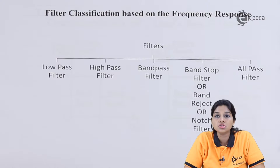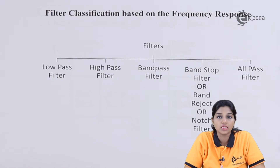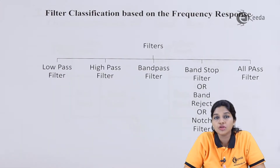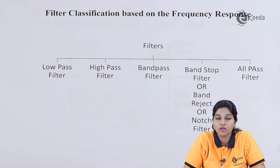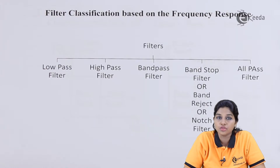Frequency response is nothing but a graph between frequency versus gain. Gain is defined in terms of ratio of output upon input and is always plotted on the y-axis, whereas frequency is always present on the x-axis. The frequency is usually taken in terms of log, because as we are dealing with frequency response, we need to consider a large amount of frequency values. Therefore, in order to accommodate large frequency values in a small space, logarithmic scale is used, whereas gain is always expressed in terms of dB.